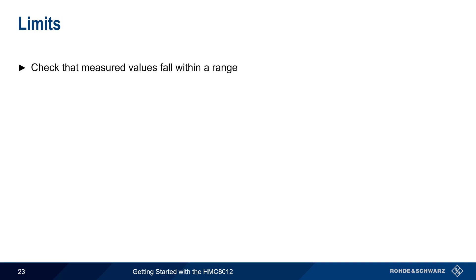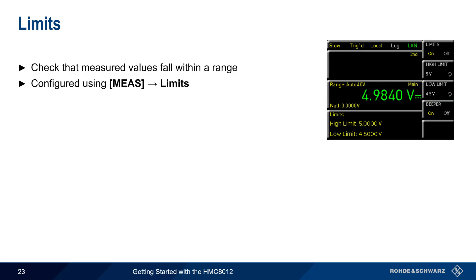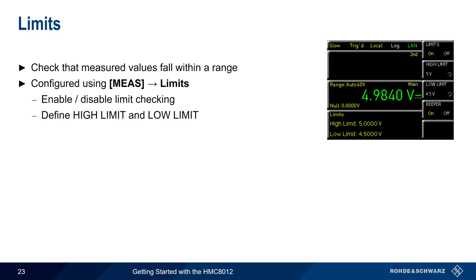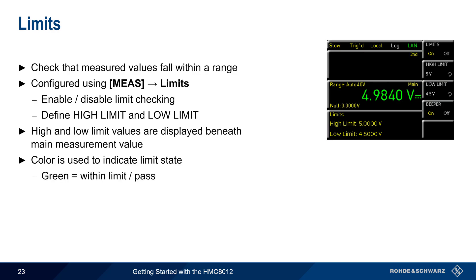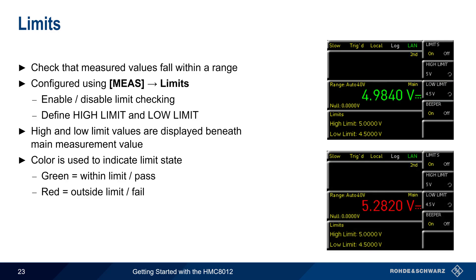Limits are used to check that the measured values fall within a given range, and are configured by pressing the measure hard key and then selecting the soft menu item limits. Here, limit checking is enabled or disabled, and the high and low limit values are defined. Color is used to indicate the limit state: green indicates the measured value is within the limits, and red shows the value is outside the configured limits. An audible tone or beep can also be configured to sound whenever a measurement value falls outside of the limit ranges.